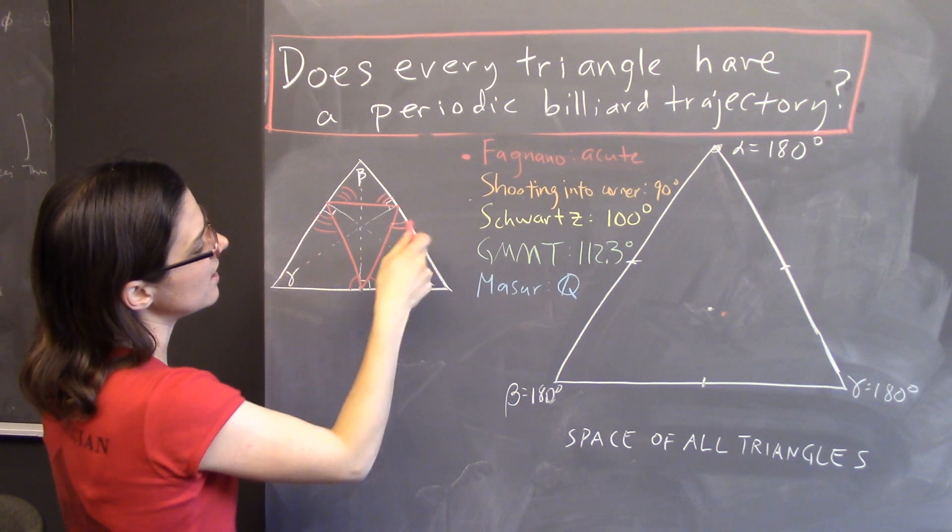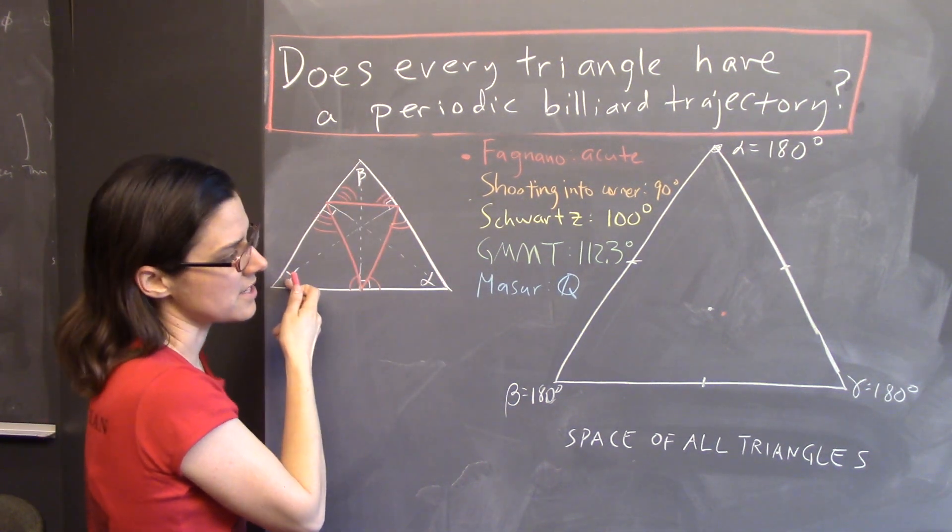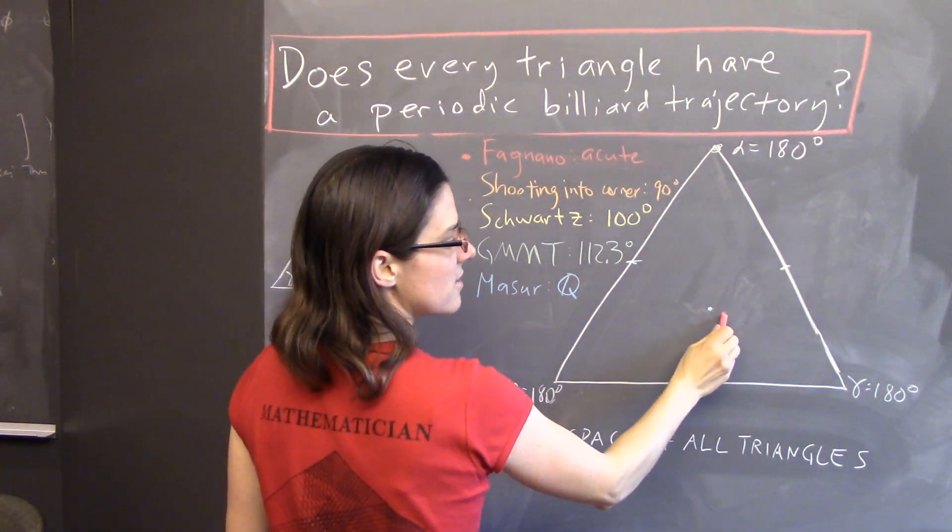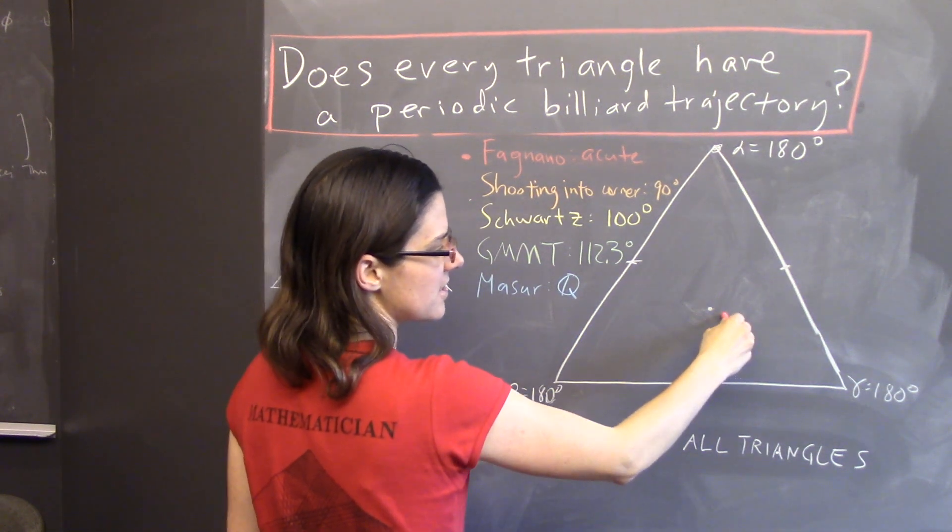Now, this triangle has angles alpha, beta, and gamma, all less than 90 degrees, that's why it's acute, and so we can plot where this is on the space of all triangles. It's right here. Alpha's a little less than 60 degrees, beta's a little more than 60 degrees, that sort of thing.